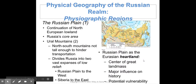Let's start with the Russian Plain. The Russian Plain is a continuation of the North European Lowlands — it's Russia's core area. The Ural Mountains run north-south but don't hinder transportation because they're not that tall. They divide Russia into the Russian Plain to the west and Siberia to the east.